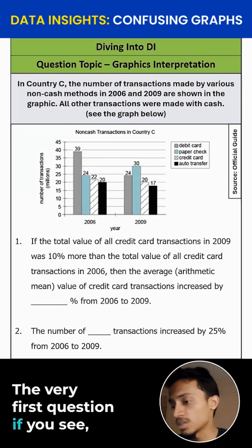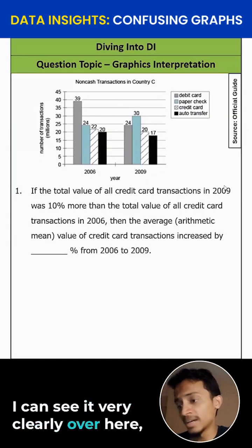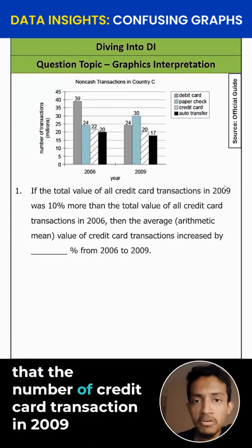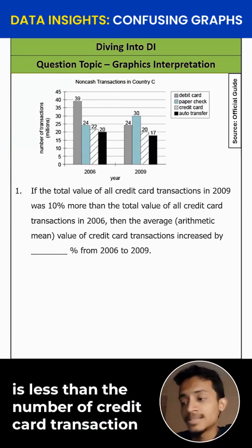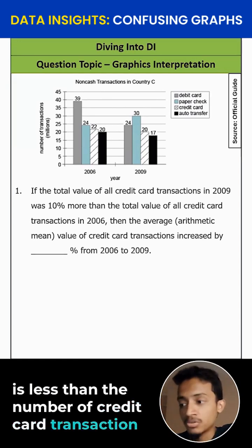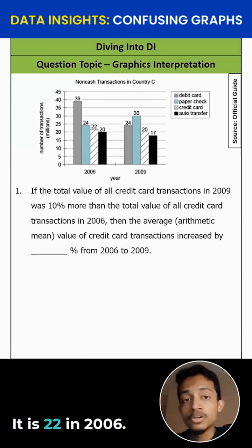The very first question — if you see, I can see it very clearly over here — the number of credit card transactions in 2009 is less than the number of credit card transactions in 2006. It is 20 in 2009 and 22 in 2006.